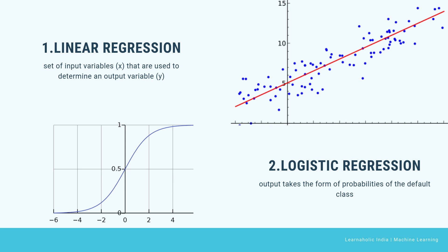The second algorithm is logistic regression. In linear regression, predictions are continuous values, but in logistic regression, predictions are discrete values after applying a transformation function. Logistic regression is best suited for binary classification. The output takes the form of probabilities of the default class, lying in the range of 0 to 1. The main goal is to use training data to find the values of coefficients b0 and b1 that maximize accuracy between the predicted and actual outcome. These coefficients are estimated using maximum likelihood estimation.